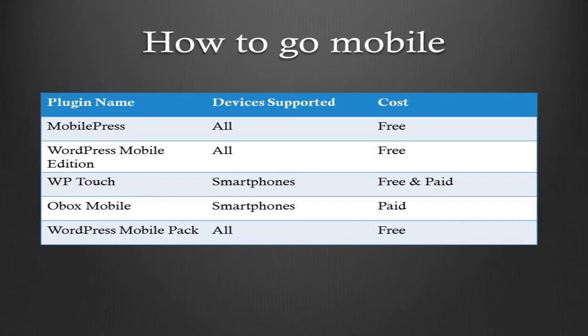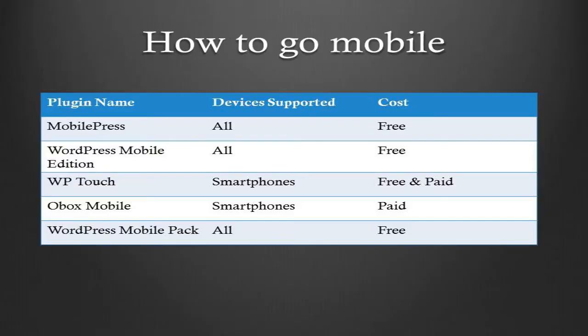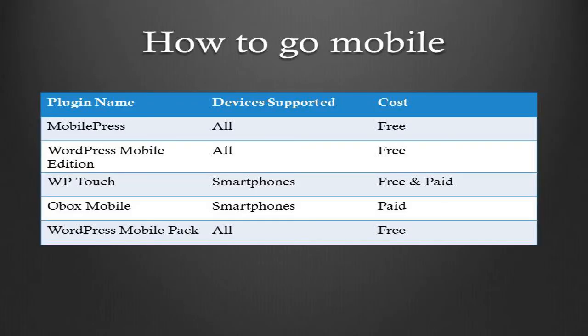For how to go mobile with WordPress, there are a lot of different mobile plugins. I've picked out five that I like: MobilePress, which supports all devices and is free and open source; WordPress Mobile Edition, also supports all devices and free; WordPress Touch, a nice plugin for smartphones with free and paid versions; OBox Mobile, a good paid plugin for smartphones; and WordPress Mobile Pack, one of the early plugins that supports all devices and is also free. I'm an advocate for the mobile web - use whichever plugin suits your taste and audience best. Just install a mobile plugin.